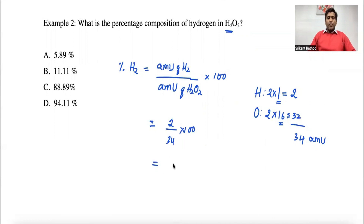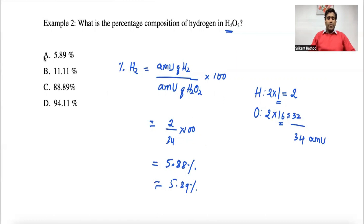Substituting into the formula: 2 divided by 34 times 100. Putting it in the calculator, you get 5.88 percent, which can be rounded to 5.89 percent. The answer corresponds to option A. This is how you calculate percentage composition. In the next video, we'll continue with this topic. Thanks for watching — all the best!